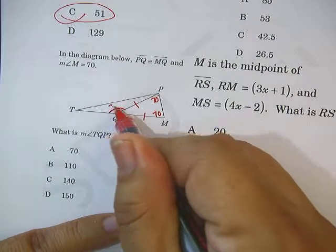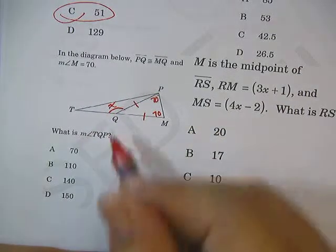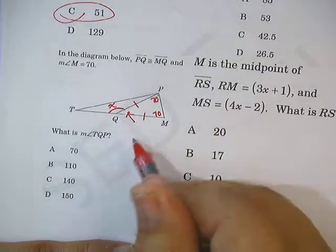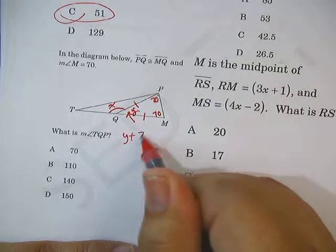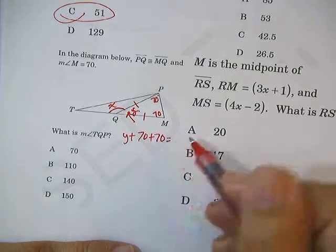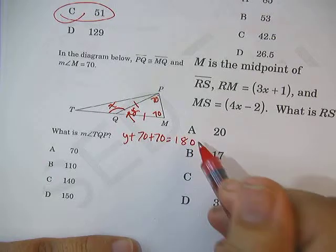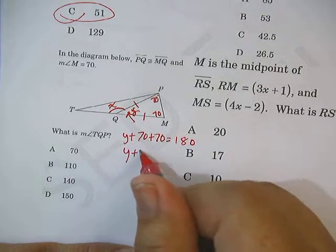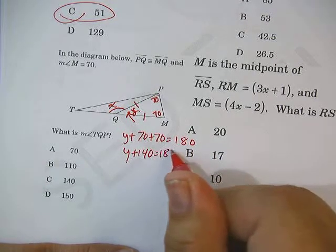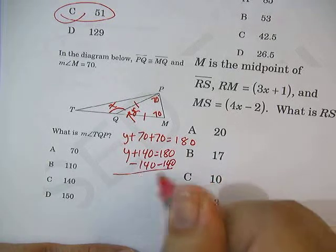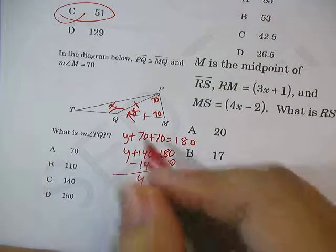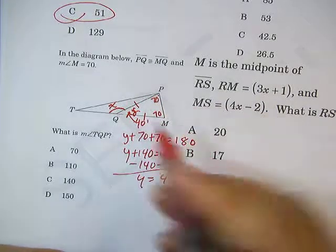Well, this angle right here, I'll call that Y. Y plus 70 plus 70 has to equal how much for a triangle? 180. So Y plus 140 equals 180. Subtract 140 from both sides. Getting a little tight. Y equals 40 degrees. So that's 40 degrees.